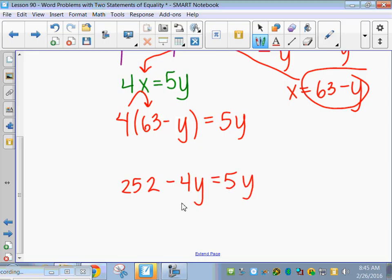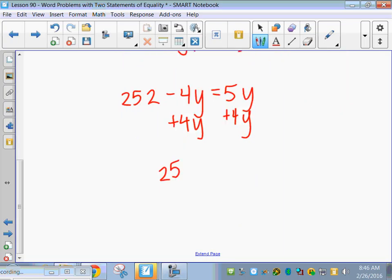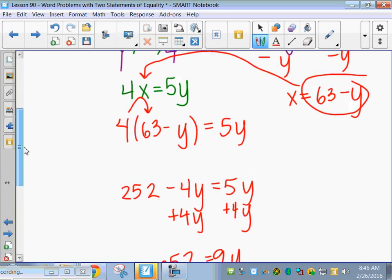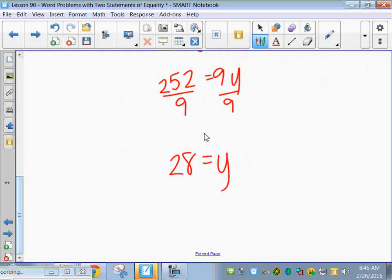We've got to get all our ys together. So add 4y. And we get 252 equals 9y. So divide by 9, it goes into 18 twice, 72 eight times. So we get 28. So probably go back up to that sum equation right here. x is equal to 63 minus y, and I'm going to plug y in as 28. Is that 35, you guys? So we get 35 for x and 28 for y.